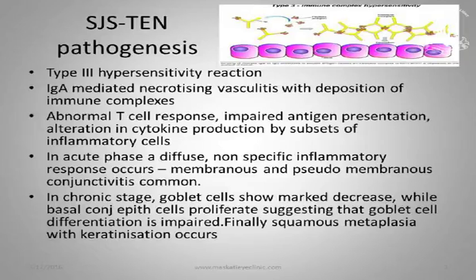In the acute phase you get a diffuse non-specific inflammatory response with membranous and pseudomembranous conjunctivitis. The distinction is that if you peel off the membrane and there is bleeding, it's membranous; if there is not, it's pseudomembranous. But it doesn't matter — the treatment is the same.